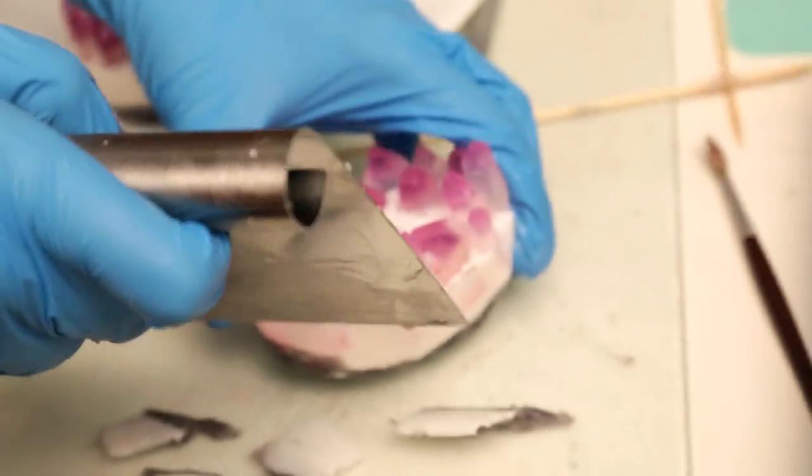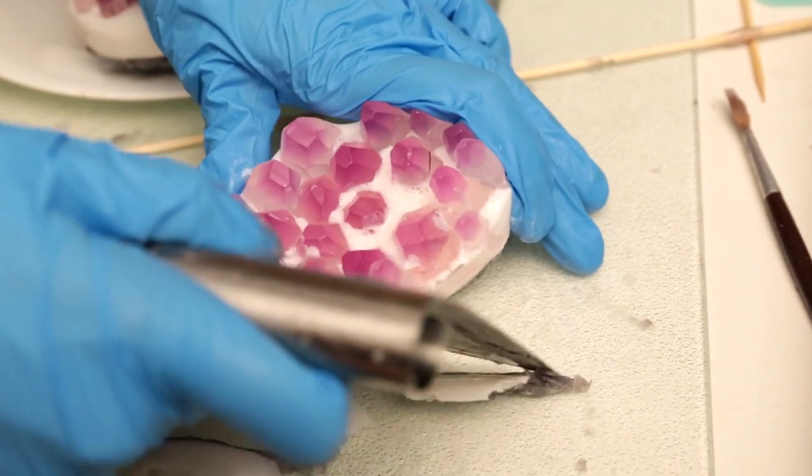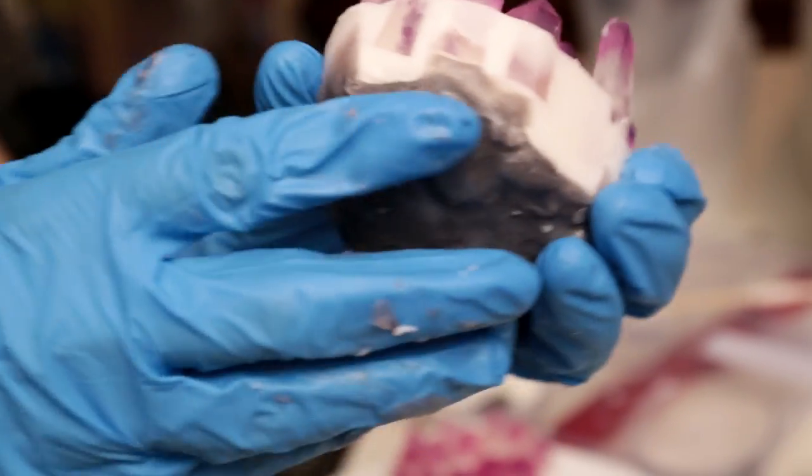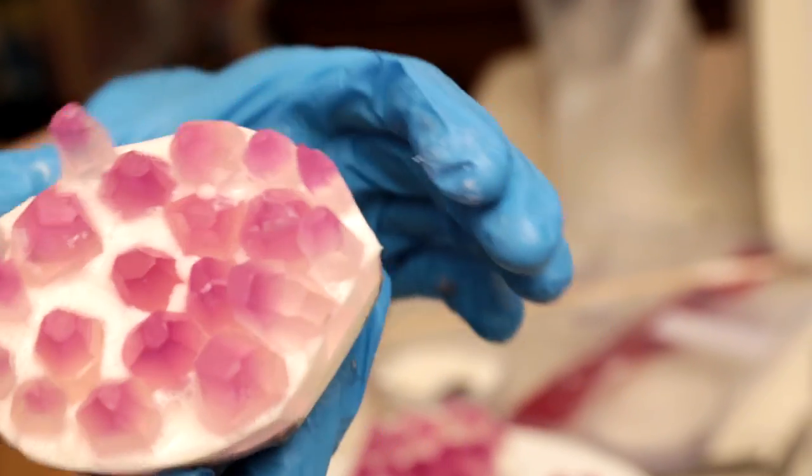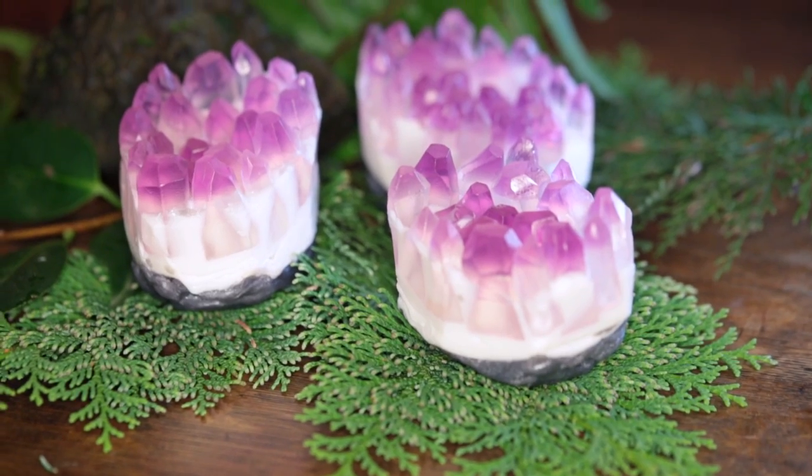Additionally you can take your straight blade cutter and trim the edges of the soap geode so that your crystals shine through. After this step you may need to press your gray soap back onto the bar. And with that you have your finished soap.